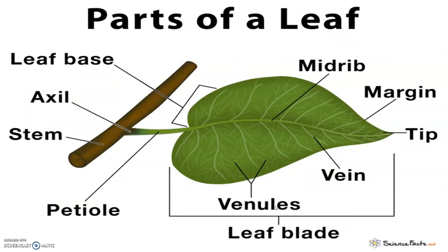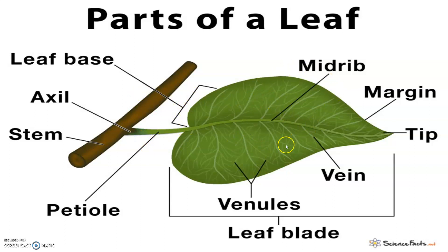The leaf is the lateral, generally flattened structure that is born on the stem and develops at the node, bearing a bud in its axil. The axillary bud later develops into a branch. Leaves originate from the shoot apical meristem and are arranged in an acropetal order — young ones towards the apex and older ones towards the base. They are the most important vegetative organs for photosynthesis. A typical leaf consists of three main parts: a leaf base, a petiole and the lamina. The leaf is attached to the stem by the leaf base and may bear two lateral small leaf-like structures called stipules.